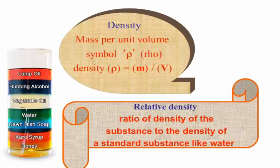Density is a very important term used in hydraulics and pneumatic systems. It is mass per unit volume, symbolized by rho: density equals M divided by V, where V is volume. Relative density is the ratio of the density of a substance to the density of a standard substance like water — that's what is called relative density.